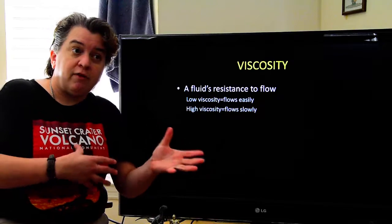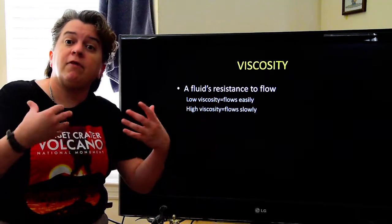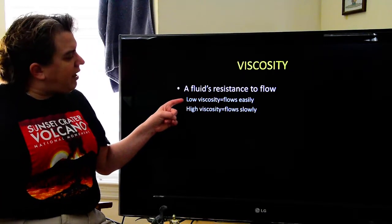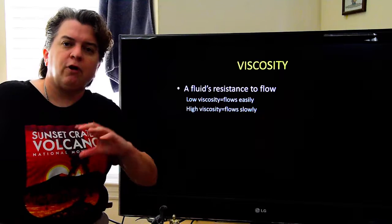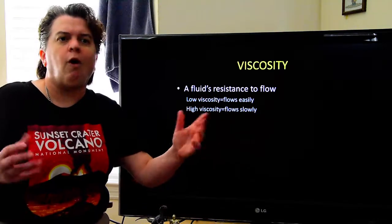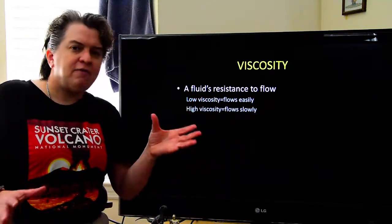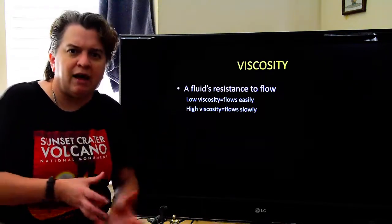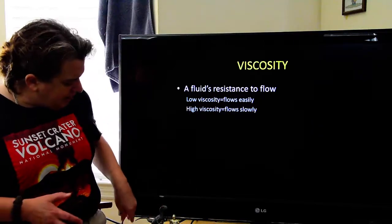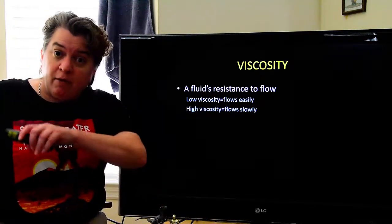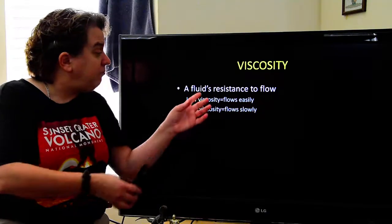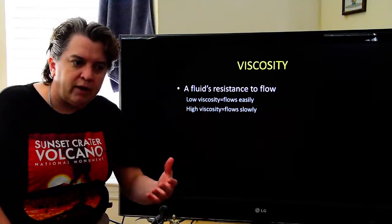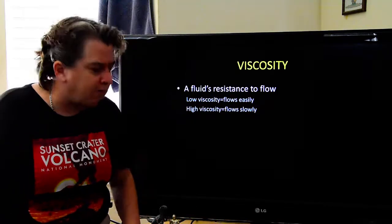So different types of lava will have different viscosity. And what does viscosity mean? Well, if something has low viscosity, it's going to flow really, really easily, like water. If something has high viscosity, it flows really slowly. It's going to be really, really gooey, like cold molasses or something. And different lavas, some of them flow really easily, they have low viscosity. Some of them flow very, very slowly, have high viscosity.